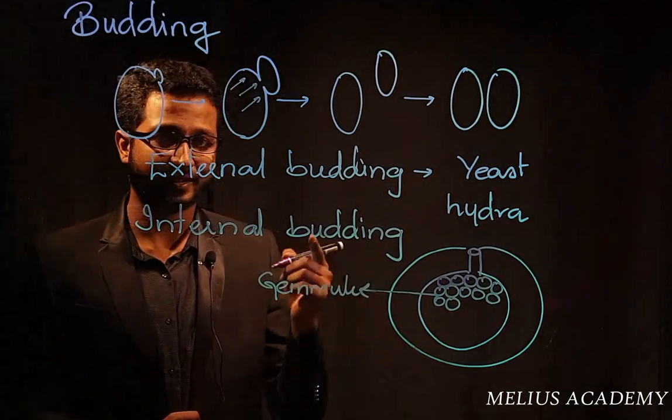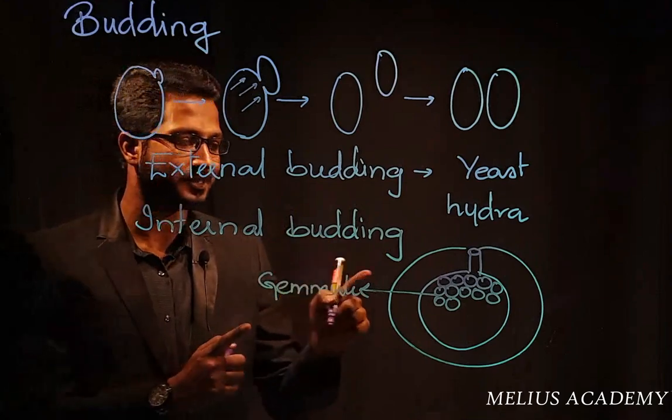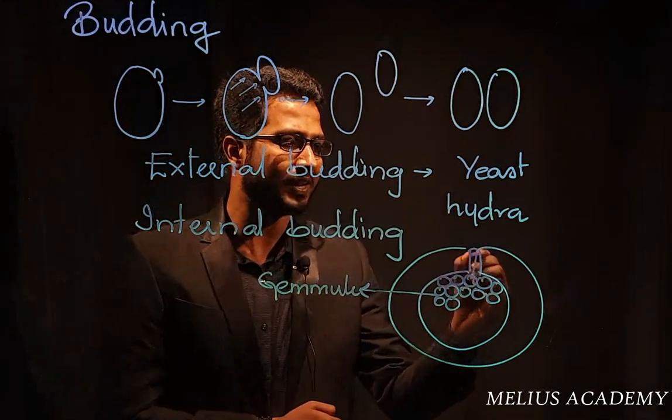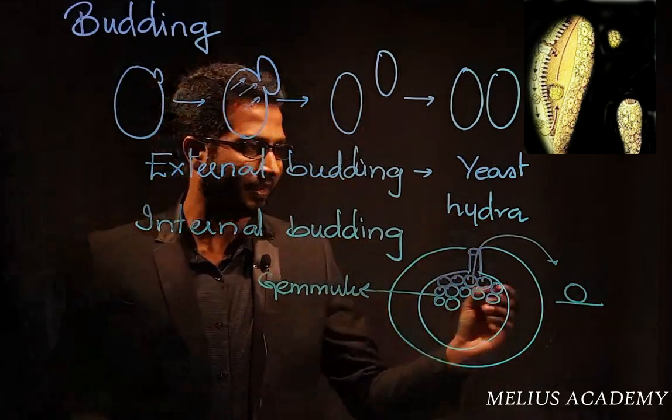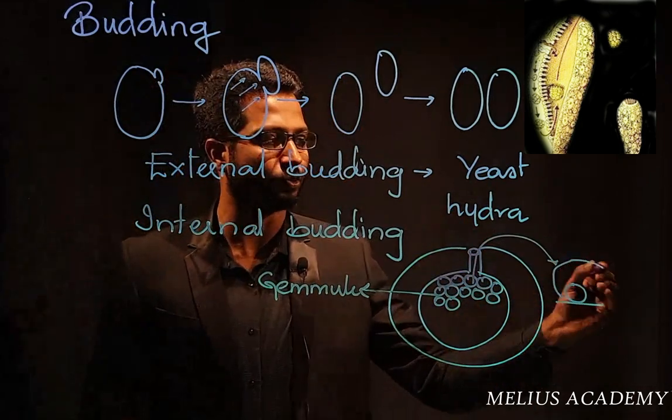Please note, gemules are also known as internal buds. Why? Because they are growing within the body. Once they are thrown out of the body, they'll fall onto suitable substratum as given in the diagram, and then they germinate into new organisms.